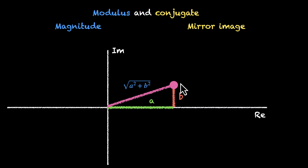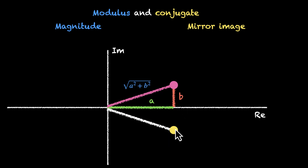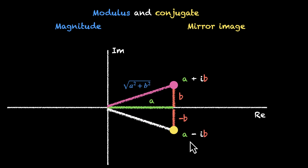What about the conjugate? If you take the real axis as the mirror, you can flip the complex number — this yellow complex number is going to be the conjugate of the pink complex number. To reach this point, we're moving a units along the real axis and minus b units along the imaginary axis. So if this is a + ib, this is going to be a − ib.